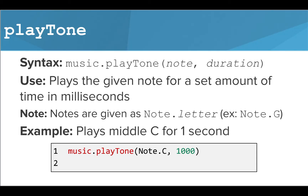We learned how to use the playtone command, which plays a given note for a set duration of time, measured in milliseconds. Notes are entered into the command as note.letter — for example, note.g or note.c.